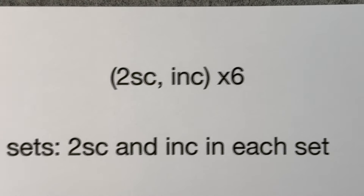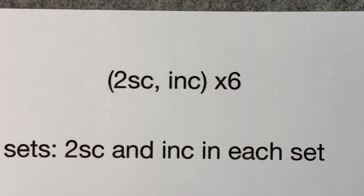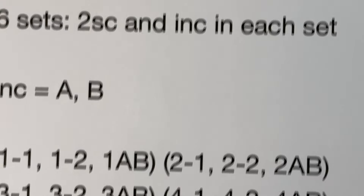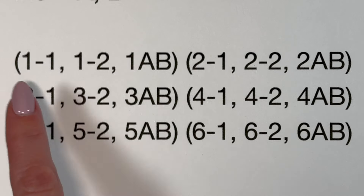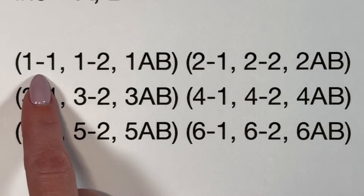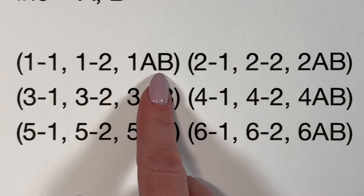When counting, I count the set number first and then the stitch number. This sequence of two single crochets and an increase times six would look like this: my stitches would be '1 1, 1 2, 1 A, 1 B' — so that's single crochet one, single crochet two, then the increase.